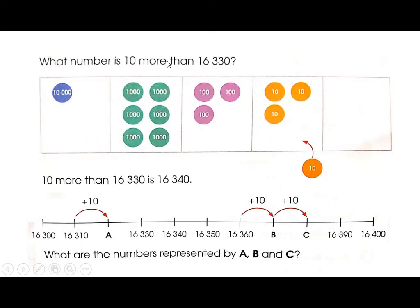Now move on to next page. What number is 10 more than 16,330? When we add 10, we will start from 16,300. 16,300 plus 10 is 16,310. Again we add 10: 16,320. When we add 10, it becomes 16,330, 340, 350, 360. When we add 10, it is 16,370. And then we add 10, it is 16,380, 16,390, then it has become 16,400.